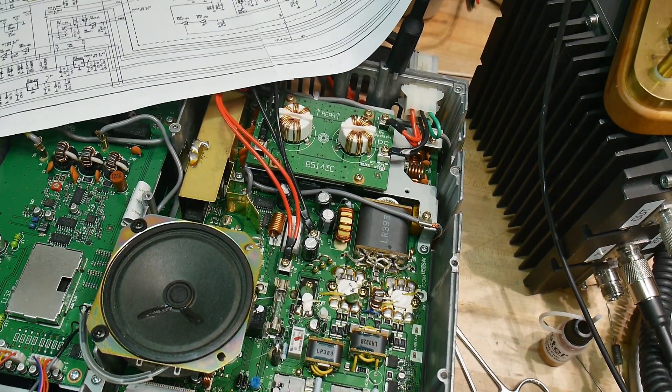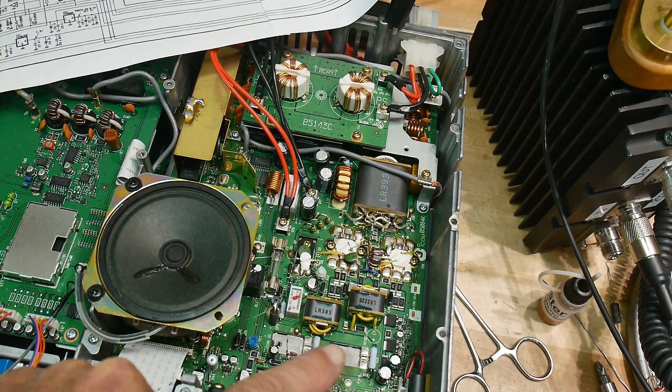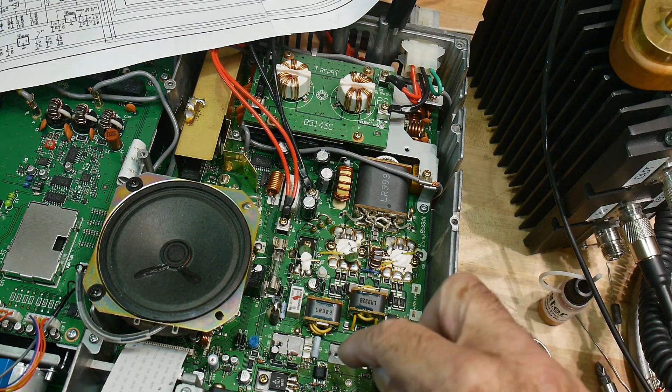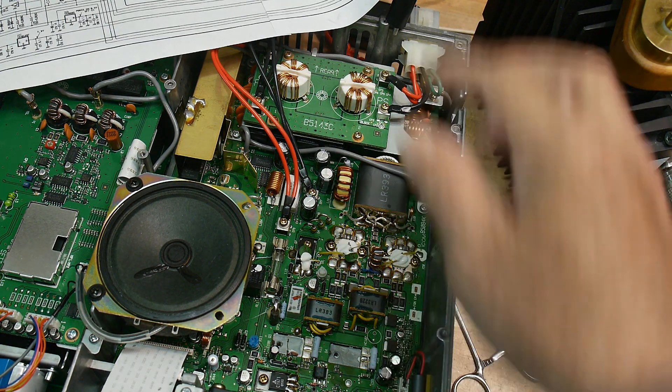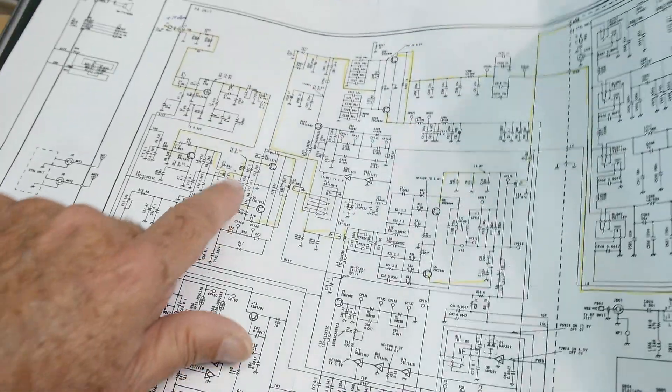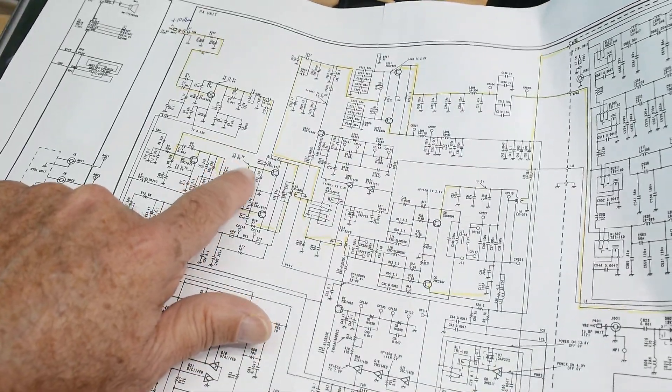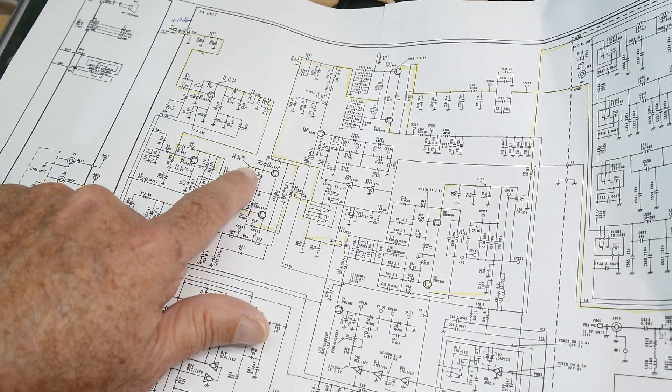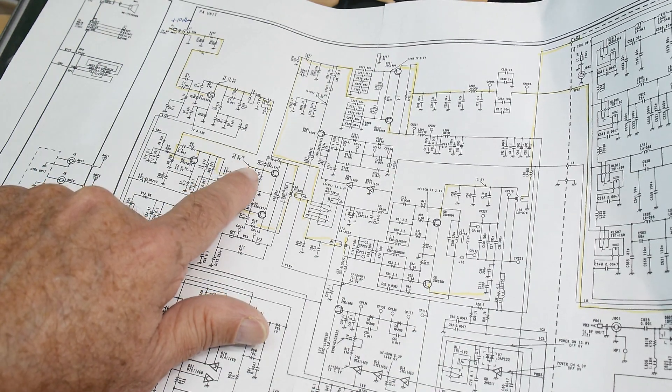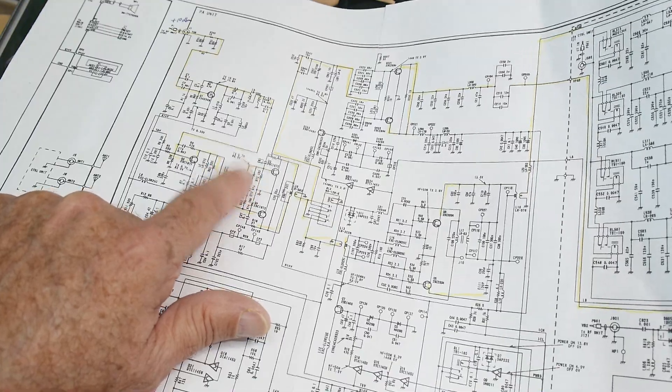All right, so there's definitely some problems down here. I looked at the schematic and it says you should be getting zero volts at this node here, or 0.7 volts. Zero volts on receive, 0.7 volts on transmit.